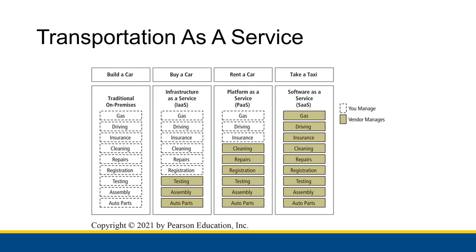Then you can look at buying a car. You buy a car that has already been built — the manufacturer has sourced the parts, assembled everything together, and tested the car. All you have to take care of is the pieces that come with owning a car: registration, repairs, cleaning, insurance, driving, and gas. You'll see these different services listed here — these are the actual cloud software services that we will be comparing this to. Building a car from scratch would be comparable to traditional on-premises — building a server yourself and managing it. But buying a car would be considered infrastructure as a service.